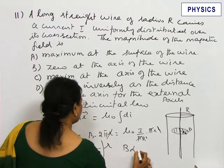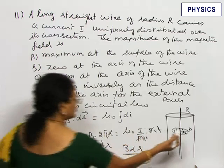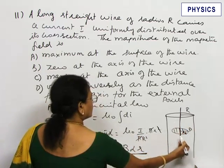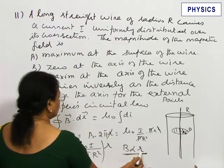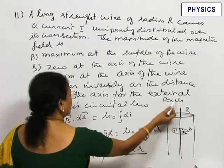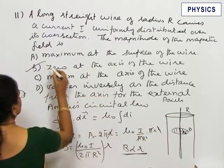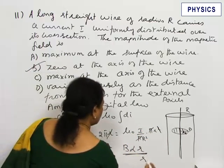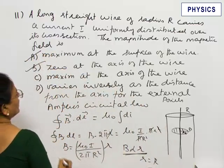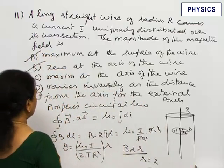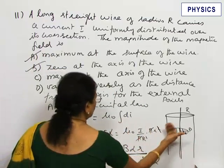We see B equal to mu 0 I by 2 pi R square times R, which is constant. For inner points, B is directly proportional to R for points which lie within the conductor. From this you see R equal to 0 at the axis of the conductor. It is 0 at the axis and R equal to capital R, maximum at the surface of the wire. Two correct choices we have obtained by considering points inside the wire.